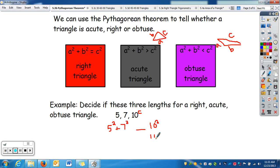Well, 10 squared is 100. 5 squared is 25. 7 squared is 49. So, adding those together is 74. 74 is less than 100. So, c squared is bigger. So, then for it, it has to be obtuse.